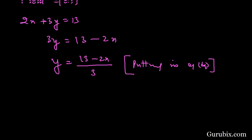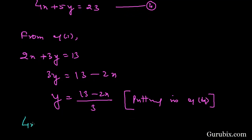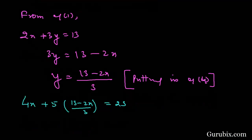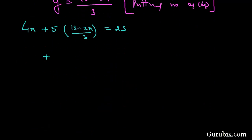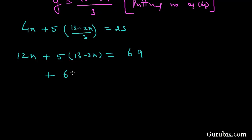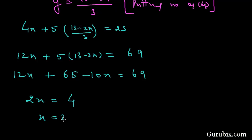Equation number 4 is 4x + 5y = 23. Substituting y = (13 − 2x) / 3 gives us 4x + 5 × (13 − 2x) / 3 = 23. Multiplying both sides by 3: 12x + 65 − 10x = 69, which simplifies to 2x = 4, so x = 2.